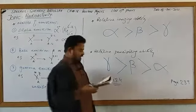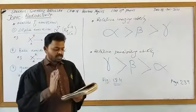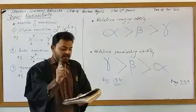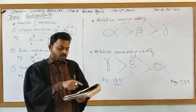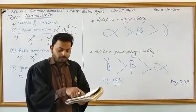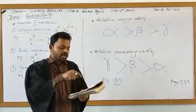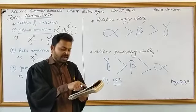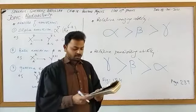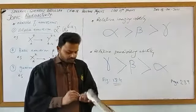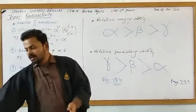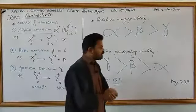As shown in figure 18.4 (page 239), alpha cannot even pass through a sheet of paper, beta can pass through paper but not aluminum foil, while gamma can pass through paper, aluminum foil, and even lead or concrete.